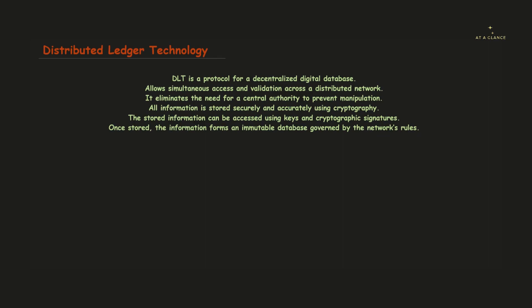Welcome back to the channel. In this video we'll be looking into distributed ledger technology, also called DLT. DLT is a protocol — a set of rules and regulations — used for a decentralized digital database. By the term 'decentralized,' there is no central authority involved in this system; it is a kind of distributed system.